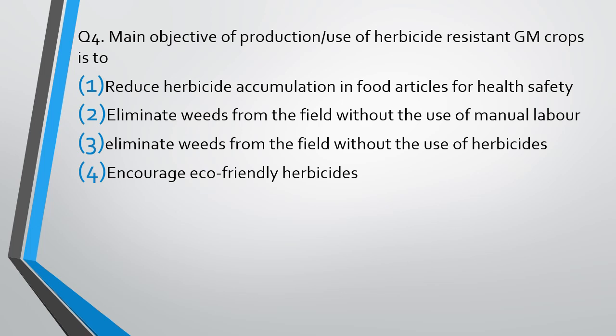Question No. 4: The main objective of production or use of herbicide-resistant GM crops is to: reduce herbicide accumulation in food articles for health safety; eliminate weeds from the field without use of manual labor; eliminate weeds from the field without use of herbicides; or encourage eco-friendly herbicides? The correct answer is option 2 — to eliminate weeds from the field without use of manual labor.